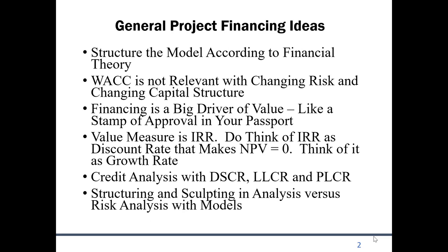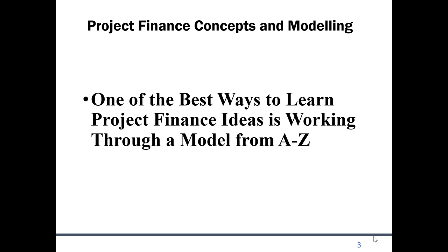When we make a model we have to understand there are two different things we're going to do. One is to use it for structuring - figuring out how much debt we can put in given the cash flows, the project cost, the equity contribution, and the risk. That's structuring and sculpting. The second thing is risk analysis, where we fix the amount of debt and then run scenarios.